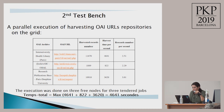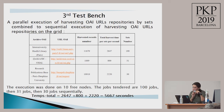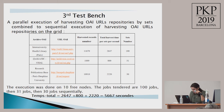In the third and fourth test benches, we increased the level of parallelism by harvesting by sets. In the third bench, we performed a parallel execution of harvesting OAI repositories by sets, combined with sequential execution of harvesting a number of OAI repositories at the same time. The execution was done on 10 free nodes. The jobs submitted were 100 jobs, then 31 jobs, then 30 jobs sequentially, representing the number of sets of each OAI repository. The total harvest time is the sum of the different harvest repository times.